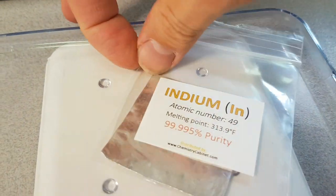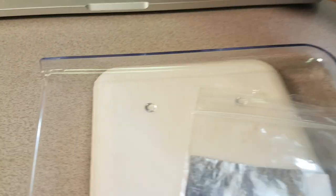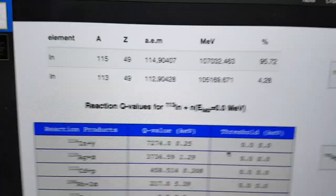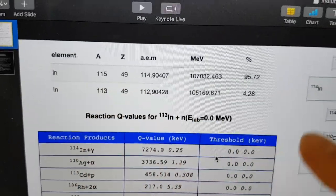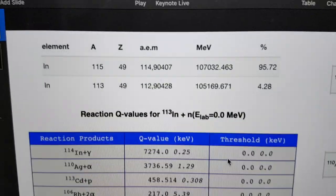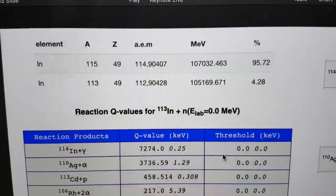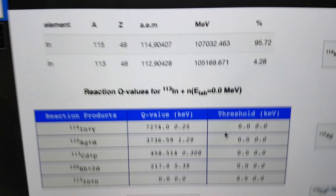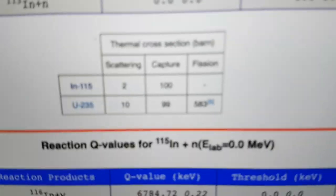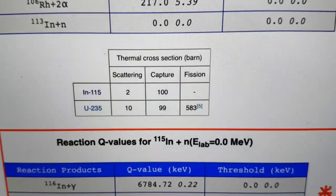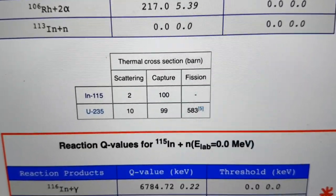So how does this work? Well, indium has two isotopes, and they are here. The indium-115 is 95.72% and the indium-113 is 4.28%. The interesting thing is that indium-115 has a high capture cross-section for thermal neutrons.